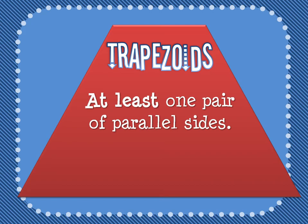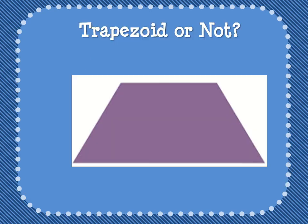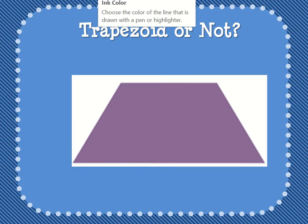Knowing that that's the definition we're going to use, we're going to look at some different shapes and figure out if they're a trapezoid or not. Looking at this first one, is it a trapezoid or not? I want you to think of your answer. Hopefully you thought yes, this is a trapezoid.